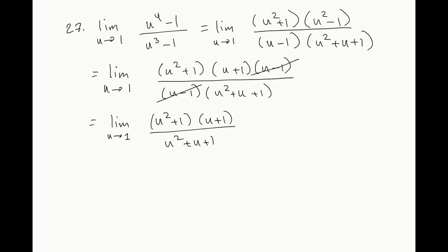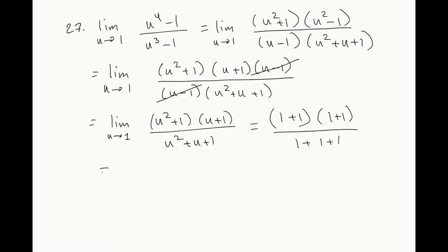We can write this as the limit as u goes to 1 of (u squared plus 1)(u plus 1) divided by (u squared plus u plus 1). We no longer have the issue of 0 in the denominator, so we use substitution: (1 plus 1)(1 plus 1) divided by (1 plus 1 plus 1), which is 4 over 3.